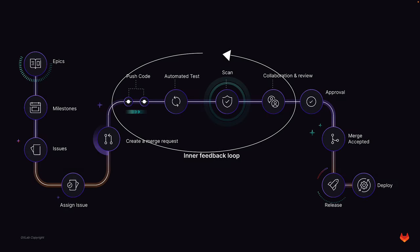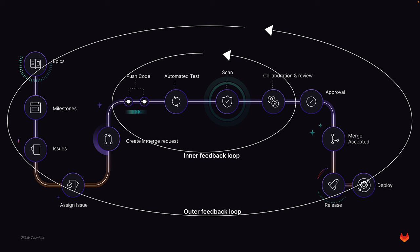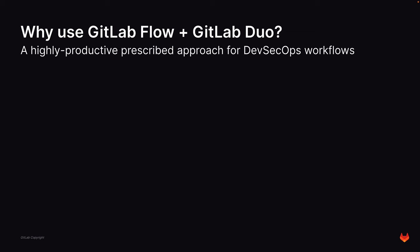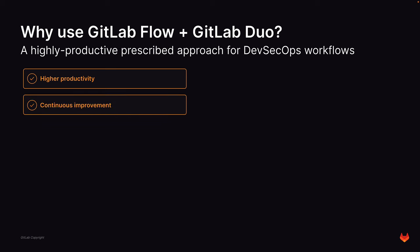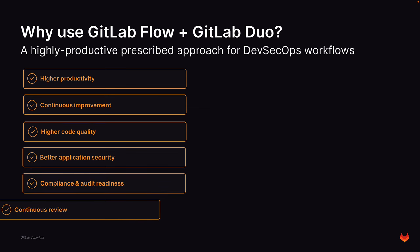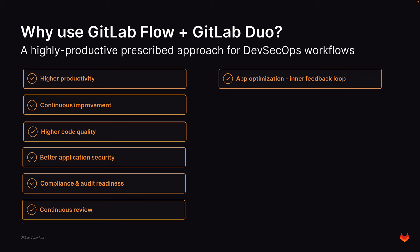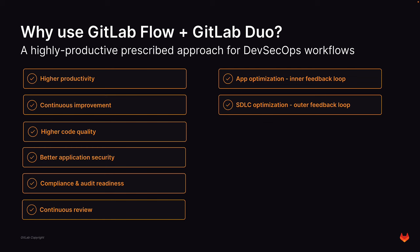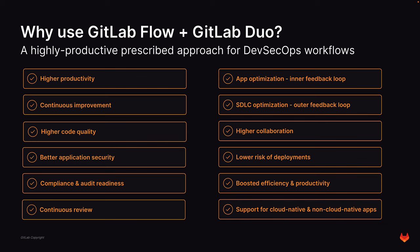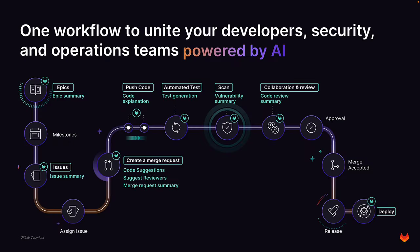All these dashboards and metrics are part of the GitLab Flow outer feedback loop to help lower the risk of unscheduled production outages and improve and optimize applications and DevSecOps workflows. Combined, GitLab Flow and GitLab Duo can help you achieve higher productivity, continuous improvement, higher code quality, better application security, compliance and audit readiness, continuous review, application optimization via the inner feedback loop, development lifecycle optimization via the outer feedback loop, high collaboration, lower risk for deployments, and boosted efficiency via GitLab Duo capabilities. Combine GitLab Flow and GitLab Duo for a workflow powerhouse.